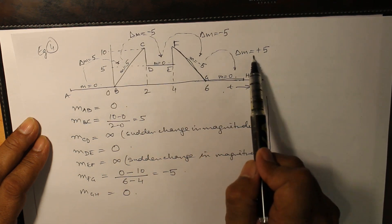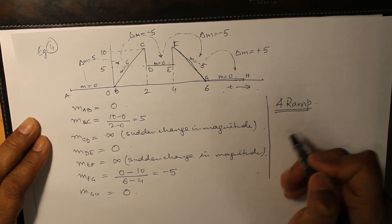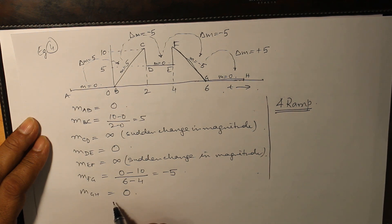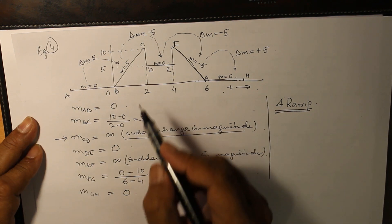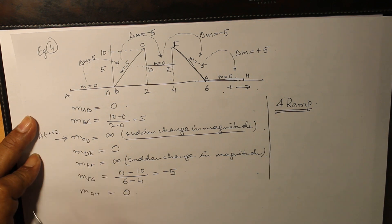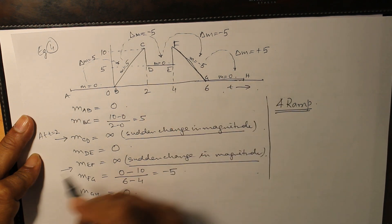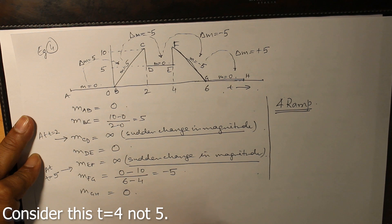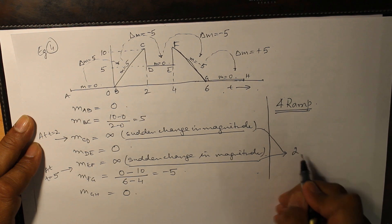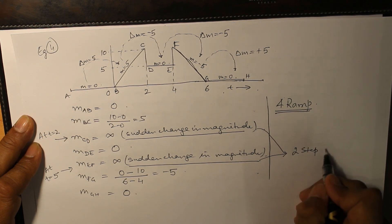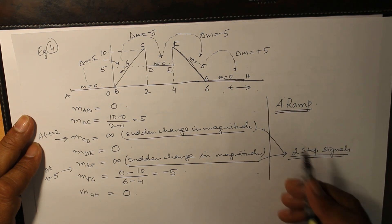So there are 4 ramp signals present which will be used to describe this waveform. How many step signals are there? The first sudden change in magnitude is happening at t equals 2, and the second sudden change in magnitude is happening at t equals 4. Because of these two, we have 2 step signals. As per rule number 3, we have 4 ramps.